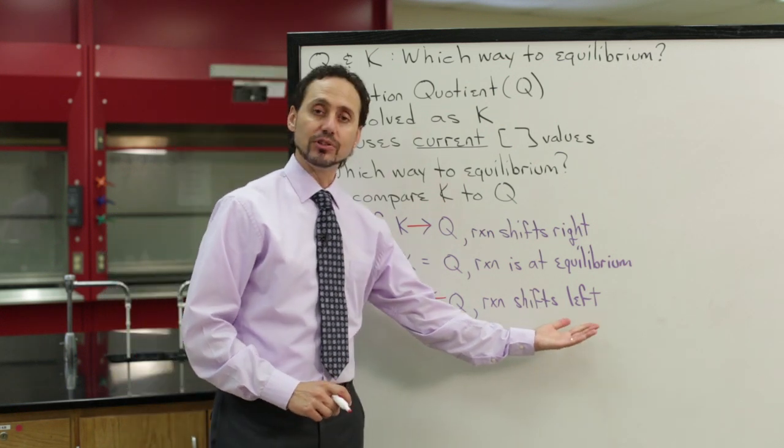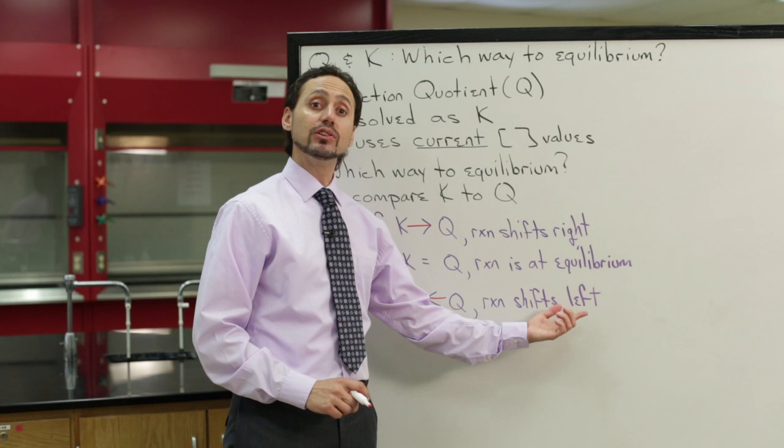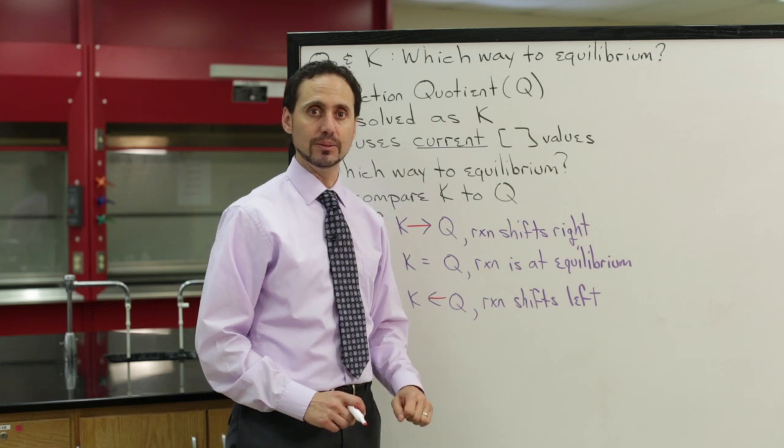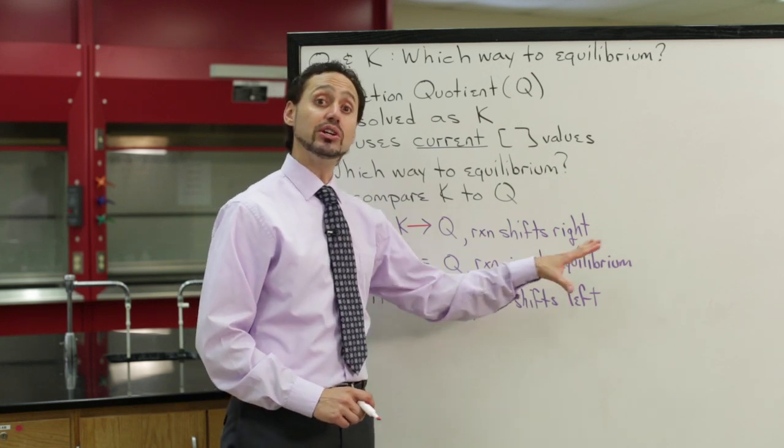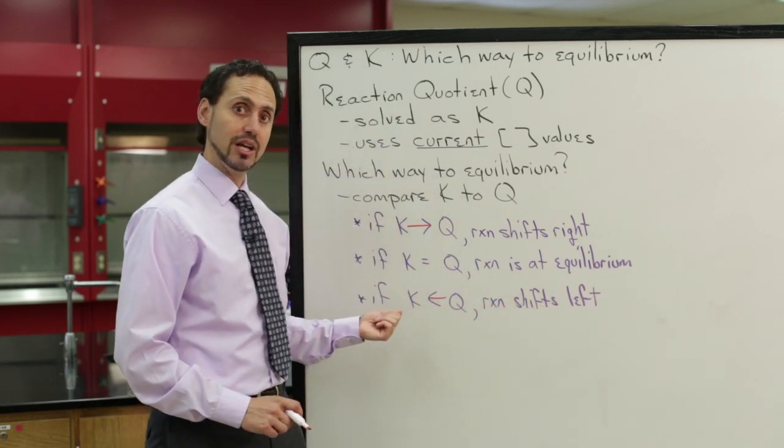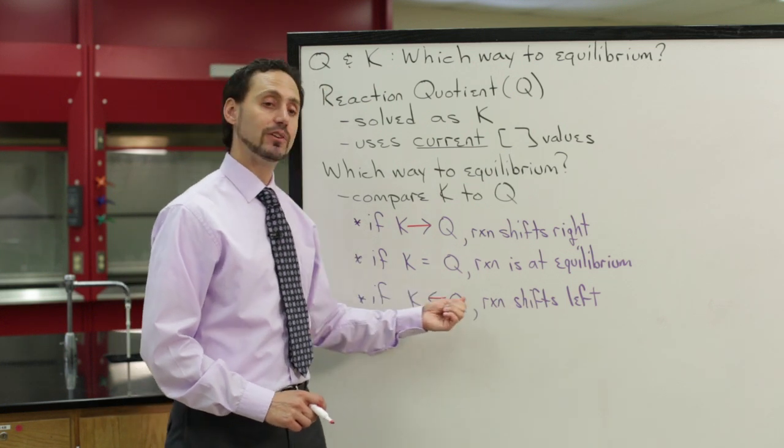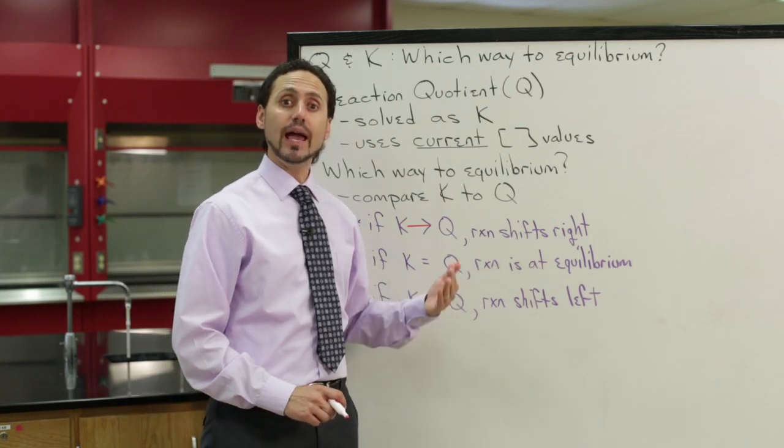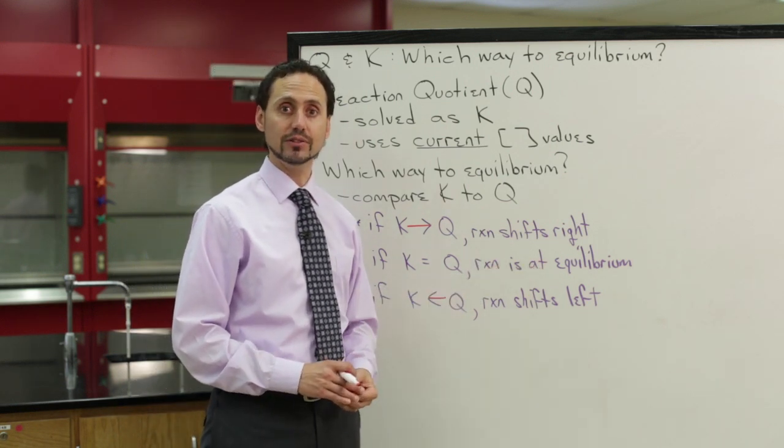What this means from a chemical standpoint is that in the current situation, there's more products than there need to be at equilibrium. So in order to decrease the amount of products, the reverse reaction is going to take place. It's going to shift to the left, and you're going to decrease the amount of products and increase the amount of reactants.